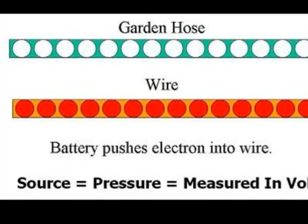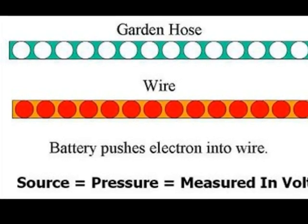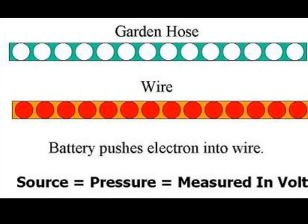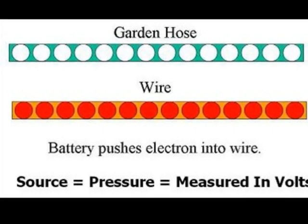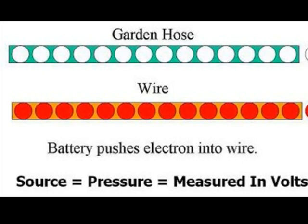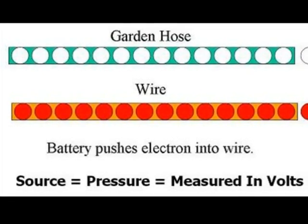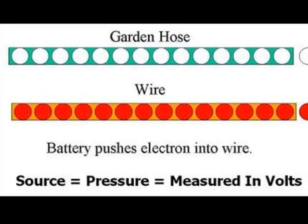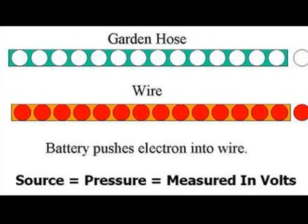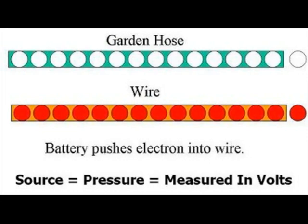When we do this, we have a domino effect — one golf ball bumping into the next one, until one tries to come out the other side. This is what happens inside of the conductor. When we hook up our source, we push an electron into one end. We have a domino effect of electrons, and then one electron does try to come out the other end and goes back to the source.